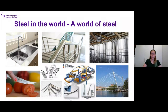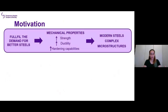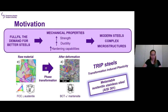We are surrounded by steel. It doesn't matter where we look — from the first moment we wake up in the morning, we can easily find an object or something that has a component made of steel. The constant evolution of our society demands better steels. By 'better steels' I mean improving the mechanical properties such as strength, ductility, or hardening capabilities, and this has been promoting the creation and development of more complex microstructures.